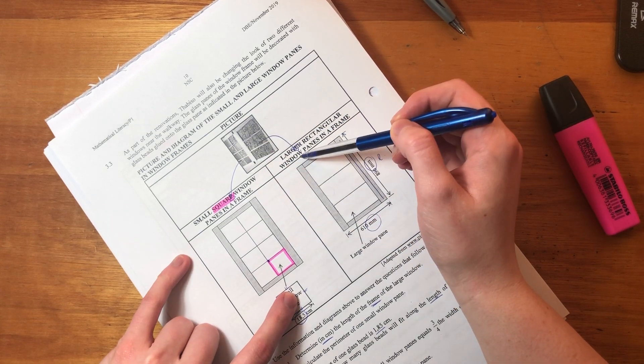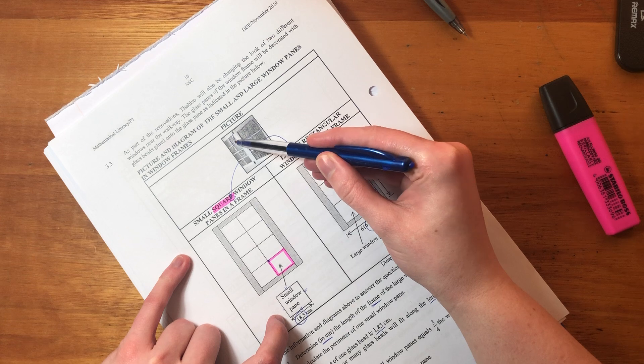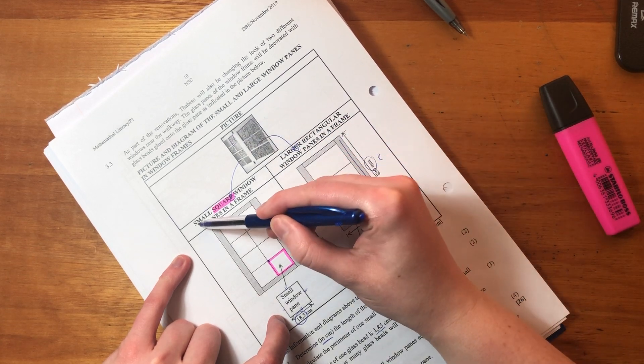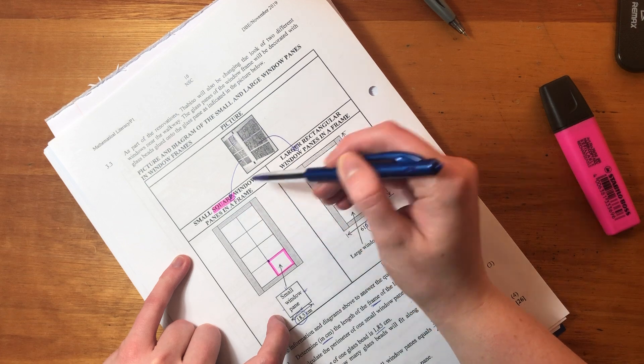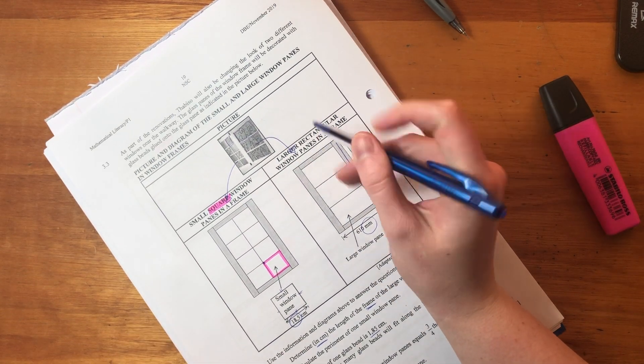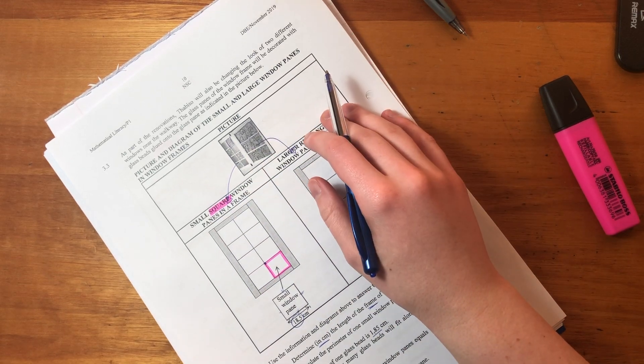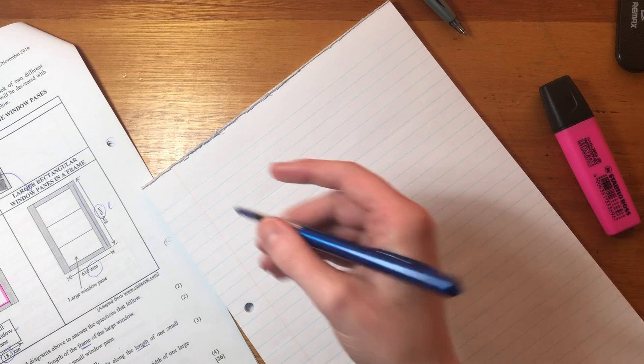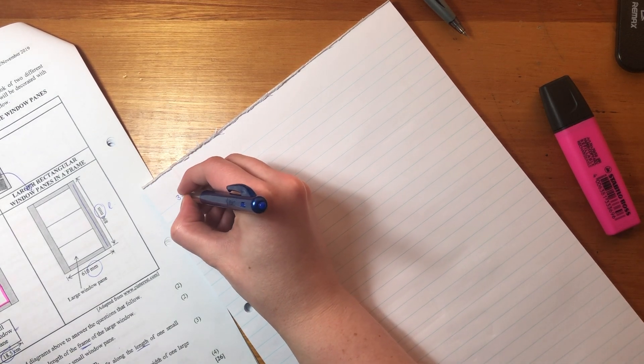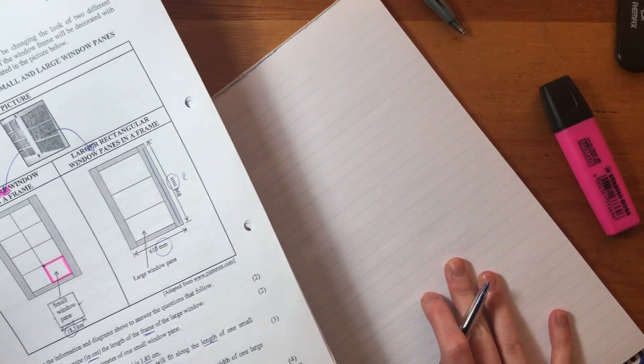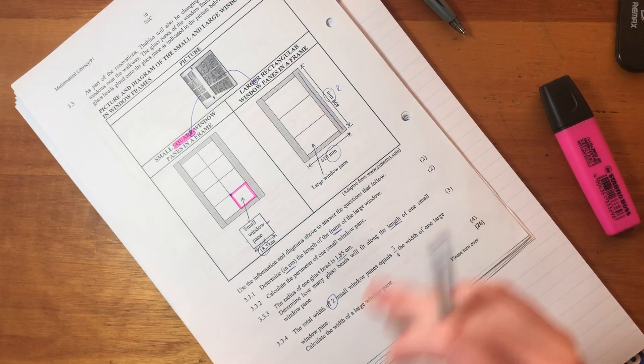The glass panes of the window frame will be decorated with glass beads glued onto the glass pane as indicated in the picture. So it's basically going to make it a bit decorative. Now there's two different types of window panes - small ones and larger ones. It's important to note that the smaller ones are squares and the larger ones are rectangles.